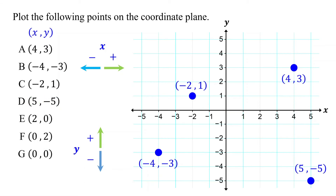Next, let's plot point E. The x-coordinate is positive 2, so start at the origin and move to the right 2 units. The y-coordinate is 0, so you do not need to move up or down. Stay on the x-axis and mark the point where you left off. This is the point (2, 0).